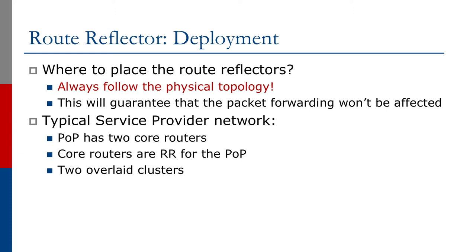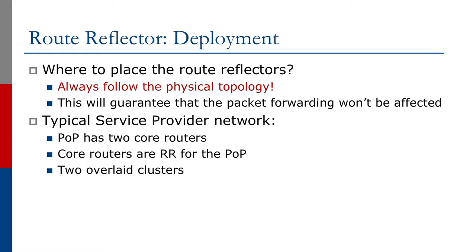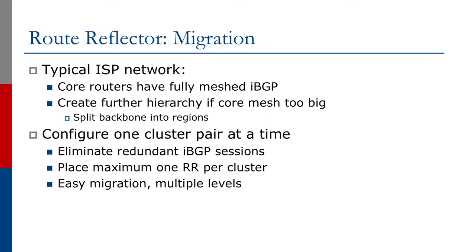When deploying route reflectors, it is critical to always follow the physical topology — have a direct connection between the route reflector and its clients, with no intermediate layer 3 devices unless they are members of the same cluster. Keep things as simple as possible. In a typical service provider POP, two core routers act as route reflectors for the POP using two overlaid clusters with fully meshed IBGP. If the core mesh grows too large, create further hierarchy by splitting the backbone into multiple regions.